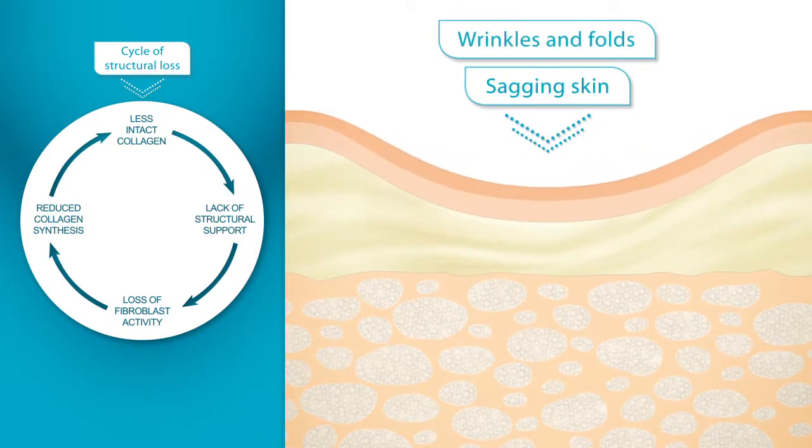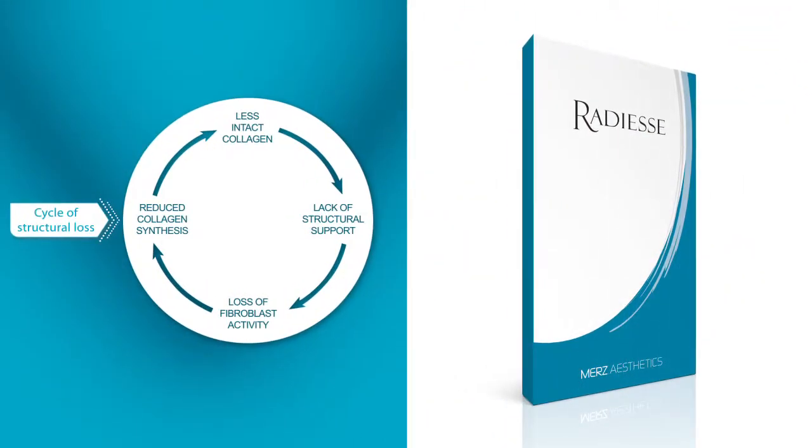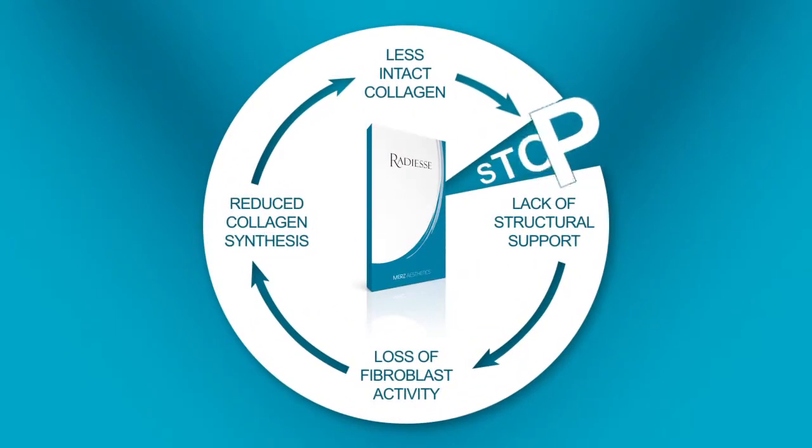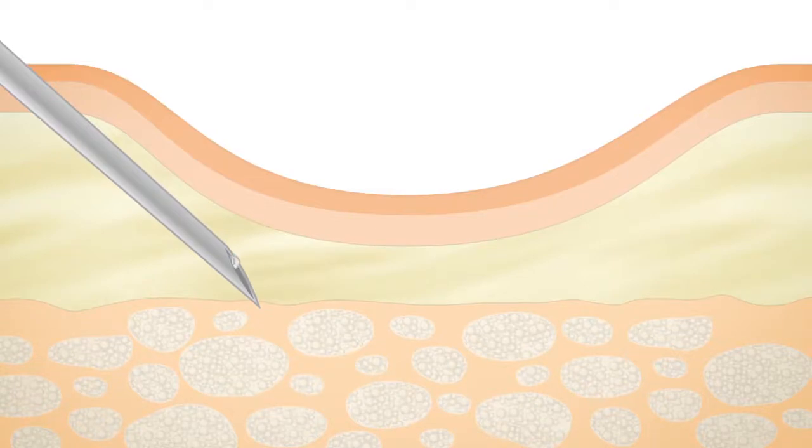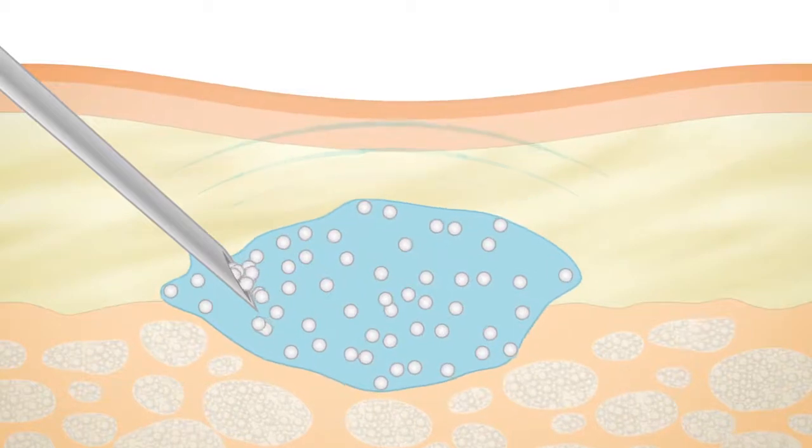Radiesse, with its unique composition of calcium hydroxyapatite microspheres in a gel matrix, can break this cycle of structural loss. Radiesse is injected directly into the deep dermis, where it shows an immediate filling effect.